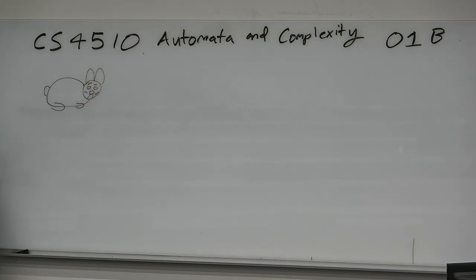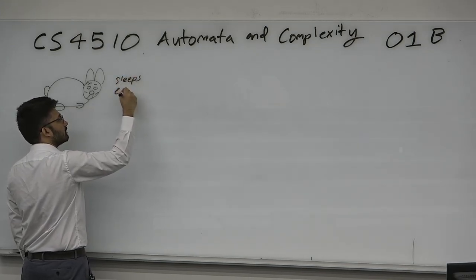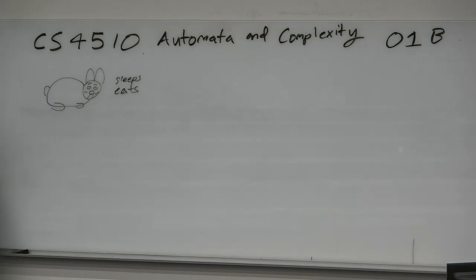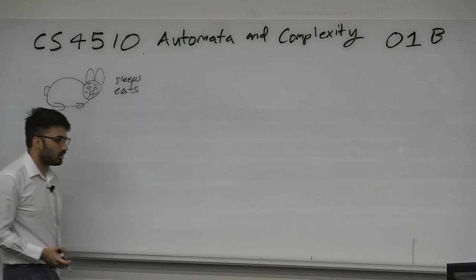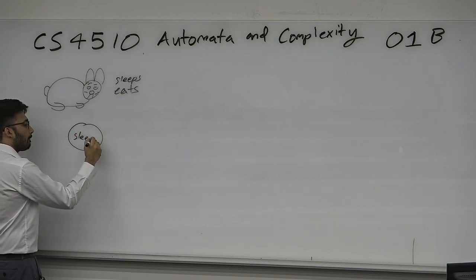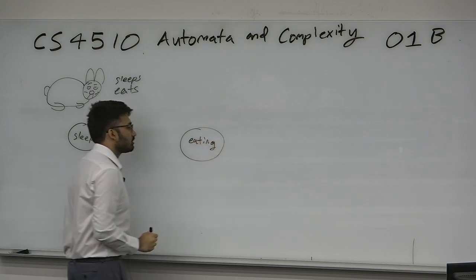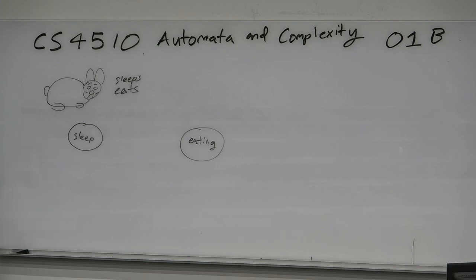I have this pet rabbit. It has two functions — barely alive — it does two things: it sleeps and it eats. That's all it knows how to do. Her name is Noonie, and she goes between these two states of being depending upon input. We're trying to come up with a model of computation, so let's start by observing the natural world.